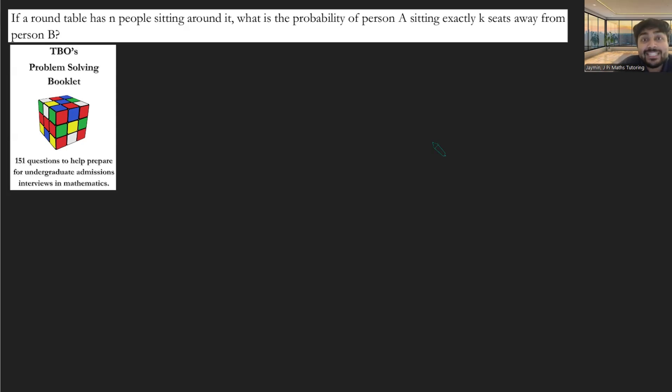Today I've got a probability problem from TBO's Problem Solving Book Club. This is for students looking to prepare for their Oxford and Cambridge mathematics interviews, which I know a lot of you have had, are currently having, or have very soon. If a round table has N people sitting around it, what is the probability of person A sitting exactly K seats away from person B?